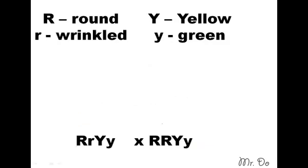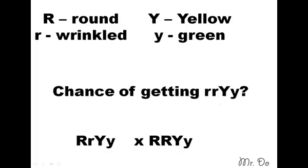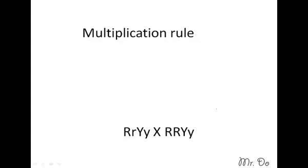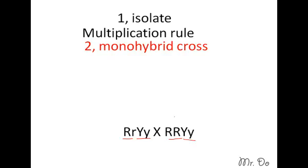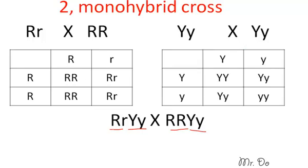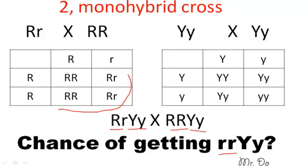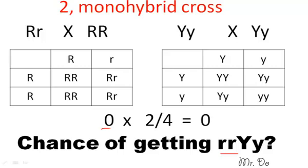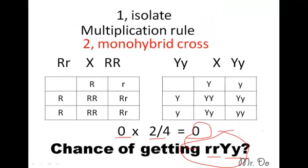Let's try another one, going back to our round and color example. What is the chance of getting homozygous recessive for one trait and heterozygous for the other? We apply the multiplication rule: isolate R with R, and Y with Y, then do a monohybrid cross for both. The chance of getting two small r (homozygous recessive) is 0%. The chance of heterozygous Y is 2 out of 4. So the total is 0 — there is a 0% chance of getting this gamete.